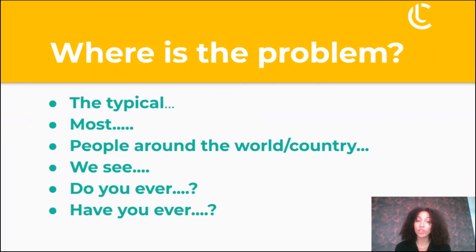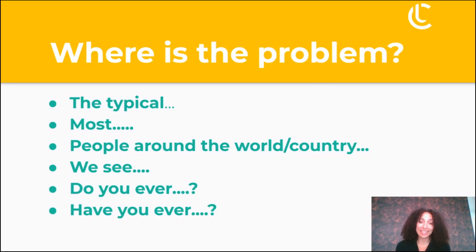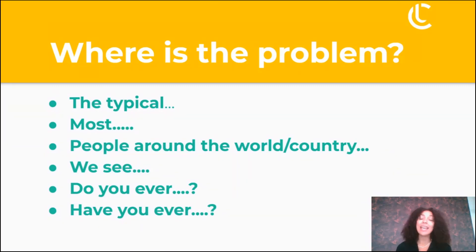Some phrases we can use to introduce a problem as widespread: we can talk about 'the typical.' You might say, 'The typical business spends lots of time on recruitment' — meaning most businesses, the average business. And I used the phrase 'most' already, which makes a generalisation — you're saying more than half. For example: 'More than half of businesses spend more time than they need to in meetings.' Similarly, 'people around the world' or 'people around the country' is a way of talking about a big group of people, making your problem seem general and applicable to many.